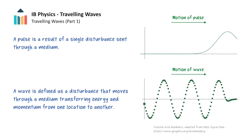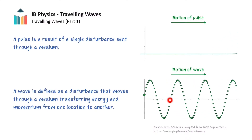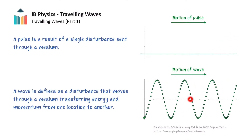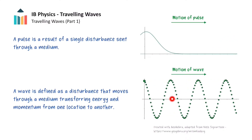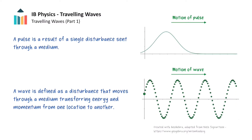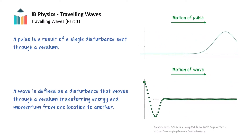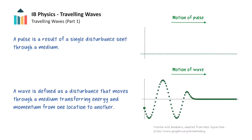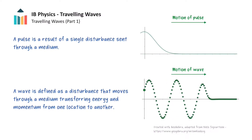As the wave propagates through the rope, the particles of the rope are momentarily displaced from their equilibrium position, causing them to oscillate up-and-down. A wave can be defined as a disturbance that moves through a medium, transferring energy and momentum from one location to another.